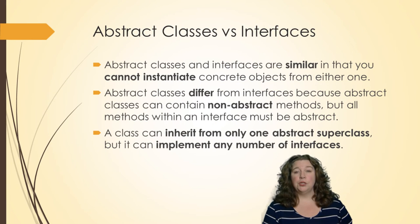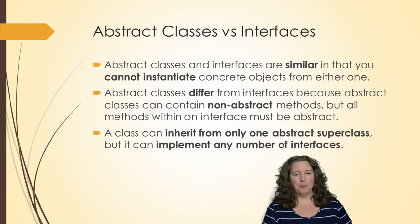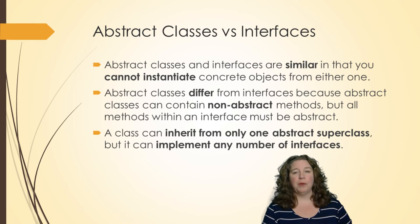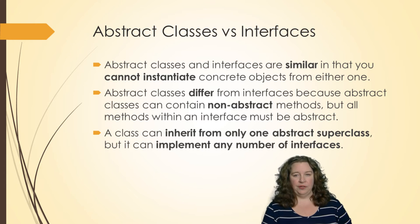We've introduced both abstract classes and interfaces, and you may be wondering what's the difference and why would I pick one over the other. They are similar in that you cannot instantiate concrete objects from either one — you don't make an abstract class object and you don't make an interface object. You have to reference the subclass of both.